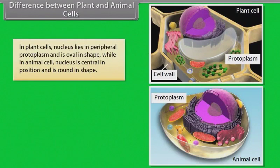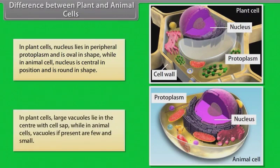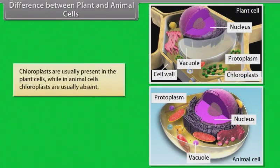In plant cells, the nucleus lies in the peripheral protoplasm and is oval in shape, while in animal cells, the nucleus is central in position and is round in shape. In plant cells, large vacuoles lie in the center with cell sap, while in animal cells, vacuoles if present are few and small. Chloroplasts are usually present in plant cells, while in animal cells chloroplasts are usually absent.